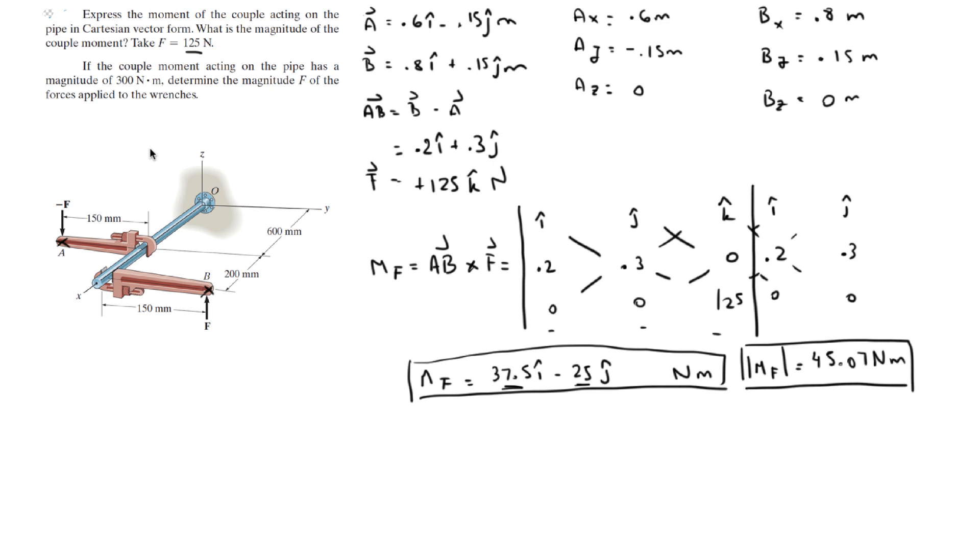So that's it for the first part. For the second part they're asking you if the moment acting on the pipe has a magnitude of 300 newton meters, in other words they already give you this, then what is the magnitude of F?